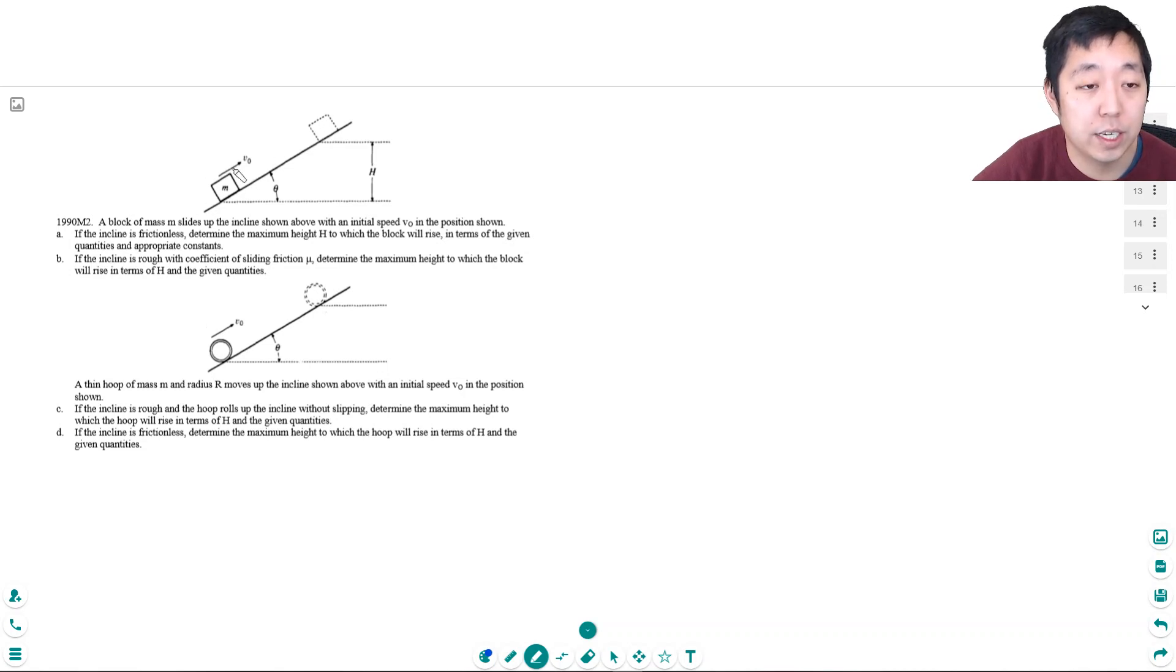All of its kinetic energy at the top of the height is going to convert into potential energy. So I'm going to say 1 half m v0 squared. Because at the top it's not going to be moving anymore, so it has no kinetic energy. mgh.